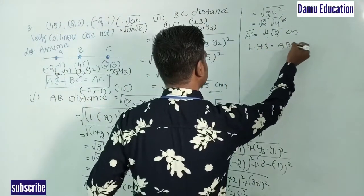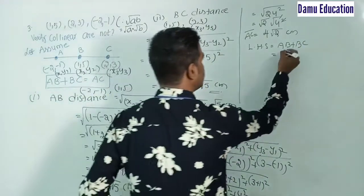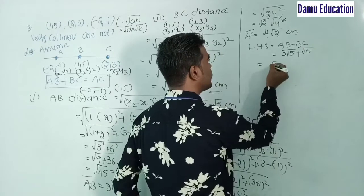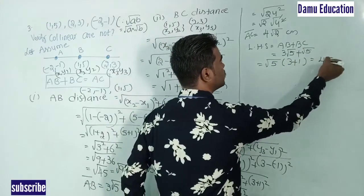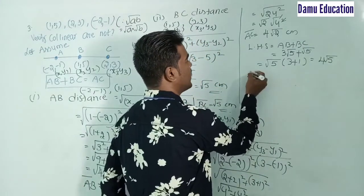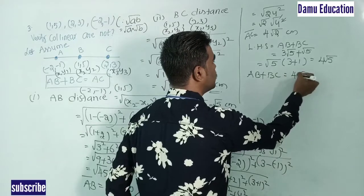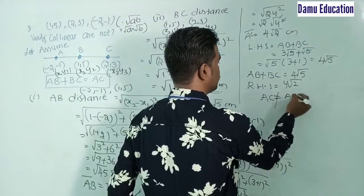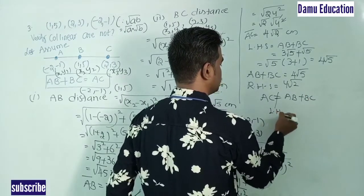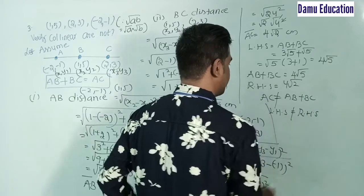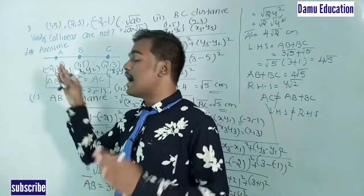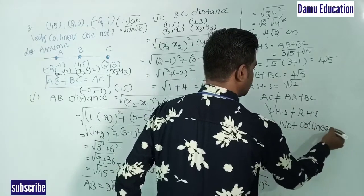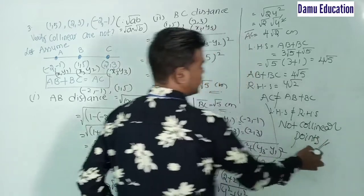Now comparing LHS and RHS: LHS = AB + BC = 3√5 + √5 = 4√5. RHS = AC = 4√2. Since LHS ≠ RHS, the condition AB + BC = AC is not satisfied. Therefore our assumption was wrong and the given points are not collinear.